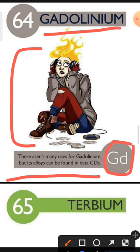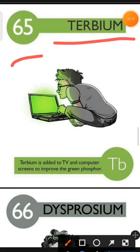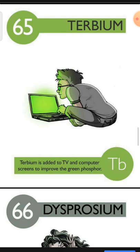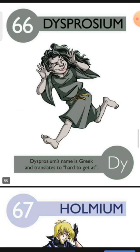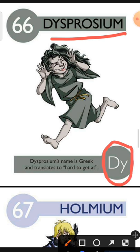Element number 65 is Terbium. The characteristic of Terbium is: Terbium is added to TV and computer screens to improve the green phosphor. Element number 66 is Dysprosium. The characteristic of Dysprosium is: Dysprosium's name is Greek and translates to hard to get at.